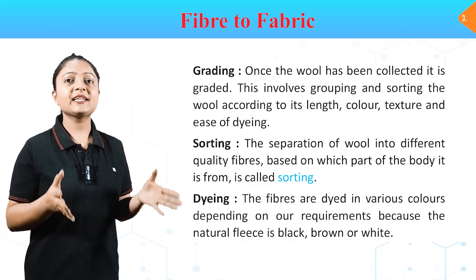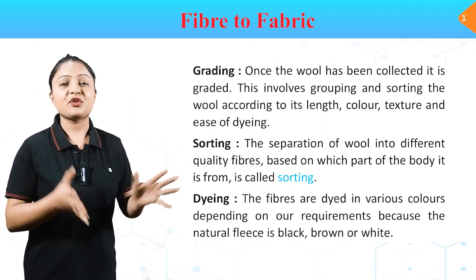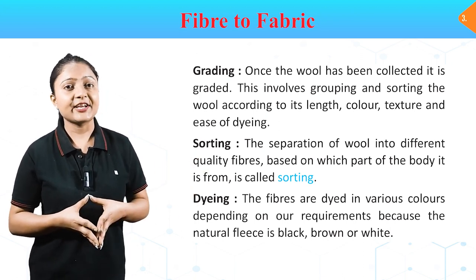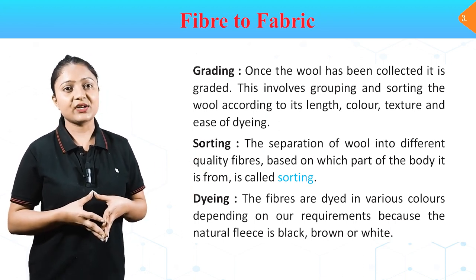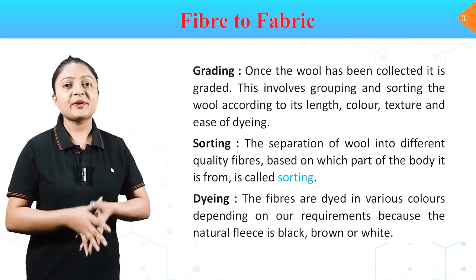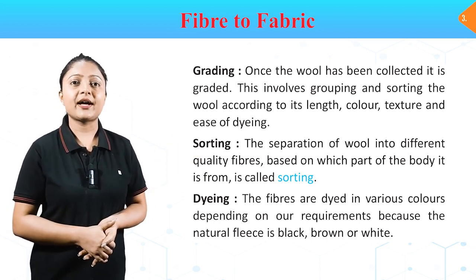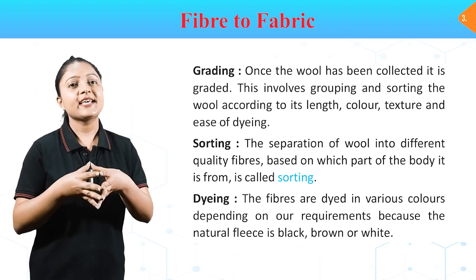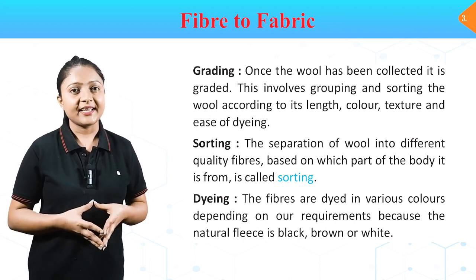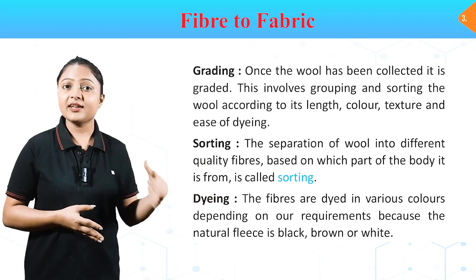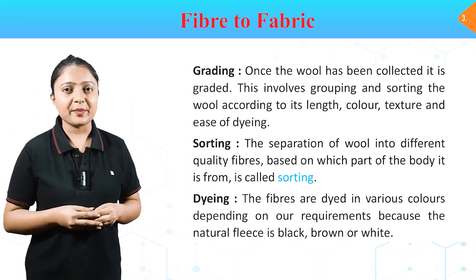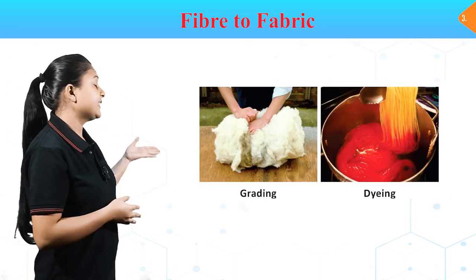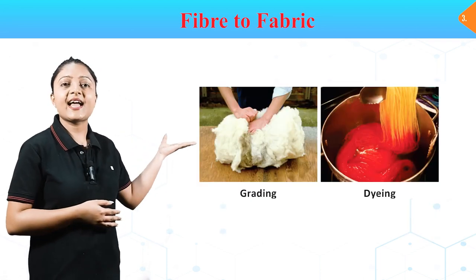Grading: once the wool has been collected, it is graded — this involves grouping and sorting the wool according to its length, color, texture and ease of dyeing. Sorting: the separation of wool into different quality fibers based on which part of the body it is from is called sorting. Dyeing: the fibers are dyed in various colors depending on requirements because the natural fleece is black, brown or white. In this image you can see grading and dyeing.